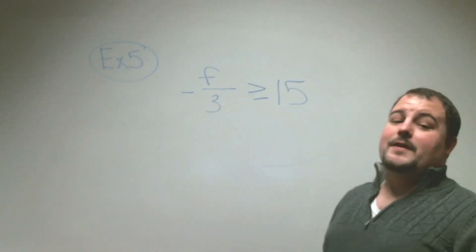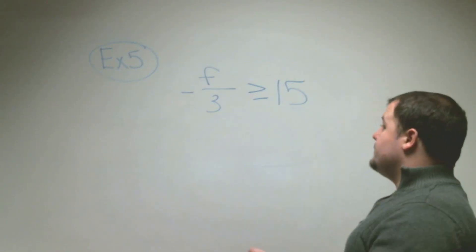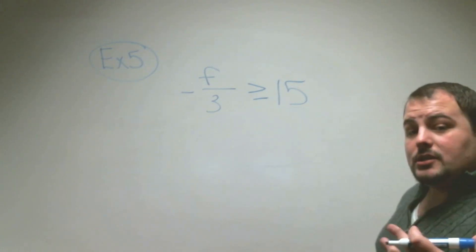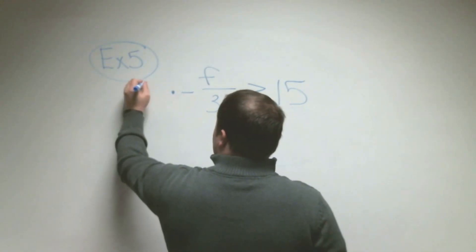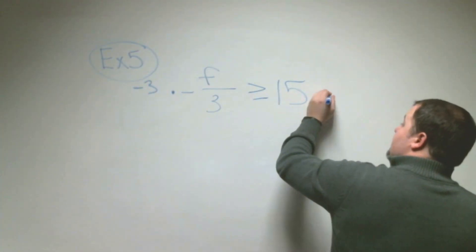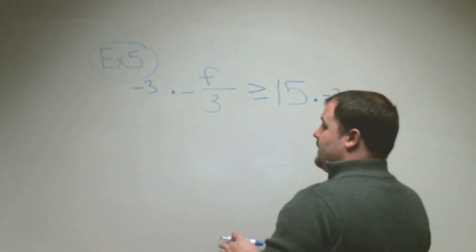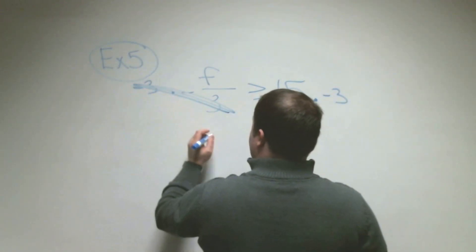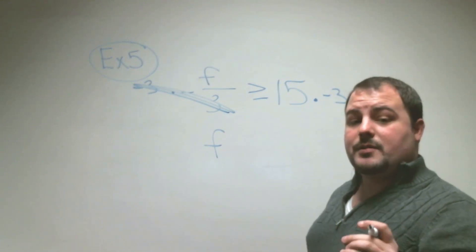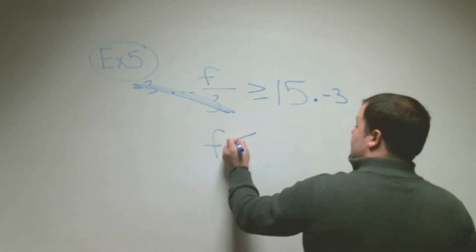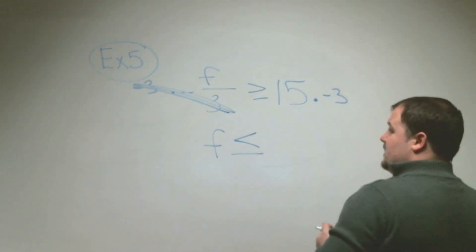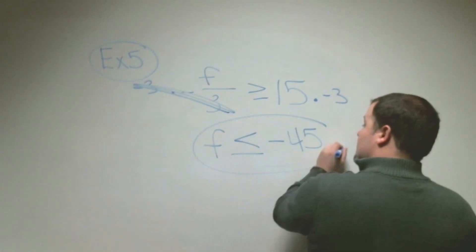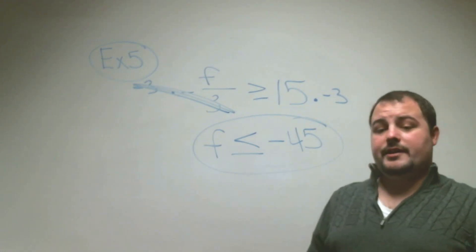In example five, f divided by negative 3 is greater than or equal to 15. To get rid of dividing by negative 3, we multiply both sides by negative 3. A negative divided by a negative gives a positive, and 3 divided by 3 is 1, so we isolate f. Since we're multiplying by a negative, we change the direction of the inequality sign. 15 times negative 3 is negative 45, so f is less than or equal to negative 45.